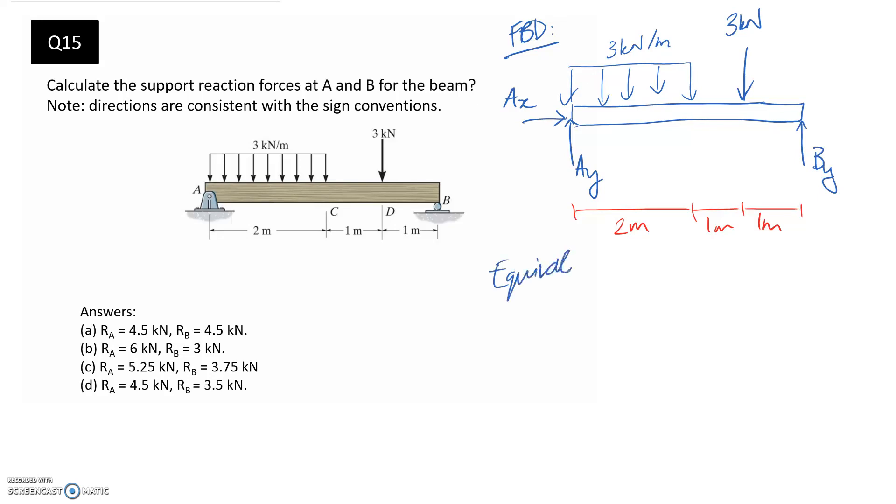I'll call this the equivalent free body diagram, so everything else is going to remain the same: AY, AX, BY, 3 kilonewtons, but this one is going to get replaced. We can figure out the total size of the force that it has, so it's 3 kilonewtons per metre, applied over 2 metres. So, it's going to be 3 times 2, which is 6 kilonewtons, and it's going to be applied through the centroid of this shape. Since it's a rectangle, I'd expect the centroid to be in the middle. If we mark in the dimensions, it's a 2 metre rectangle, so halfway would be 1 from each side. 1 metre.